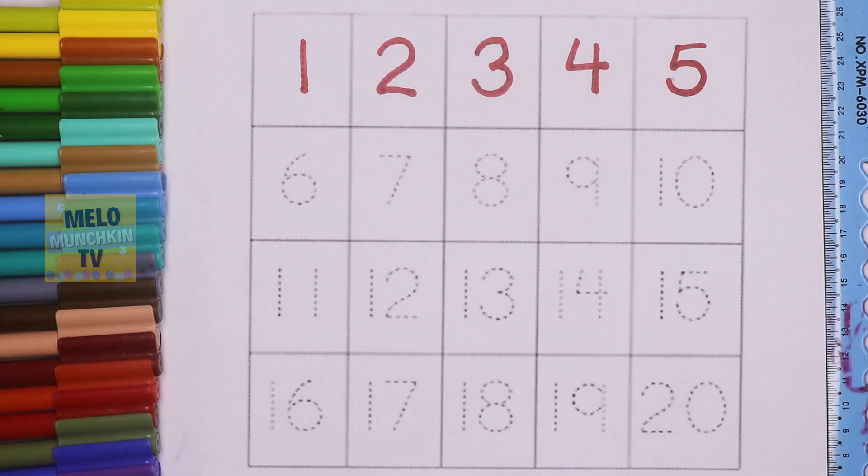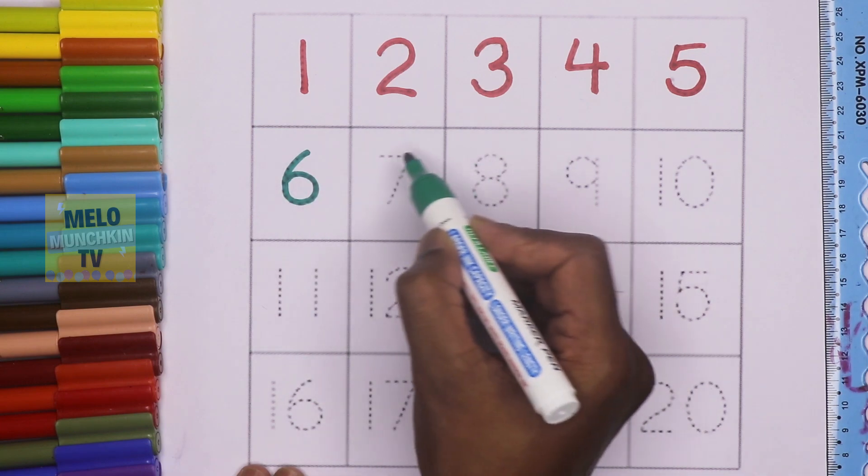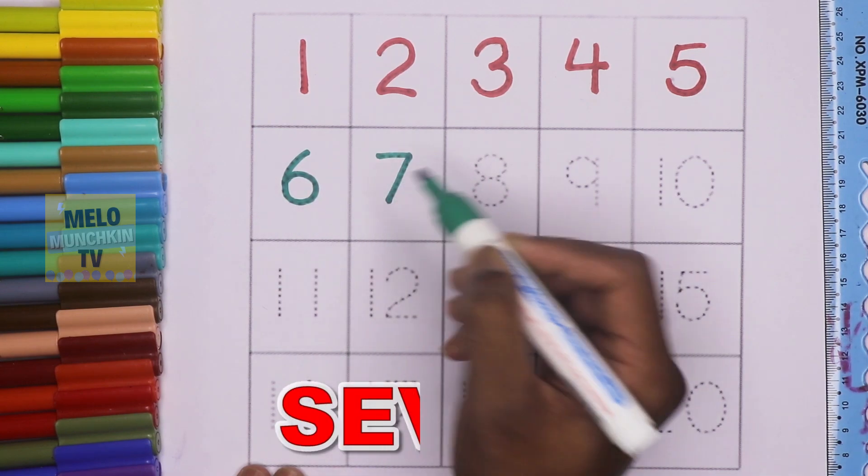Let's use some different color. Green color. This is number six. S-I-X-6. This is number seven. S-E-V-E-N.